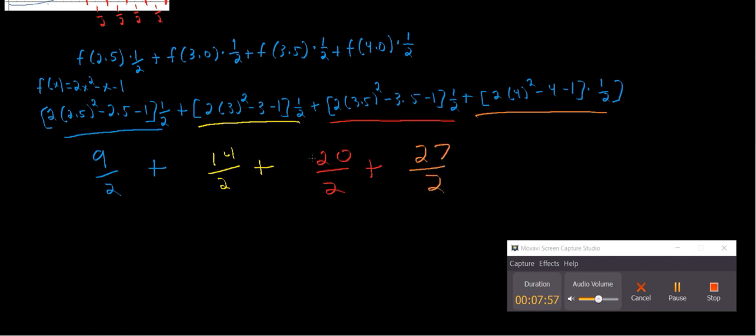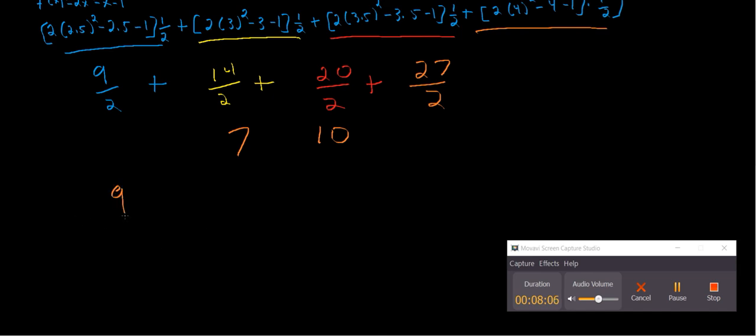All right. Well, this is 10. This is 7. So we have 9 halves plus 17 plus 27 halves. 27 halves plus 9 halves is 36. 36 halves, which is 18. So that's 18 plus 17 equals 35.